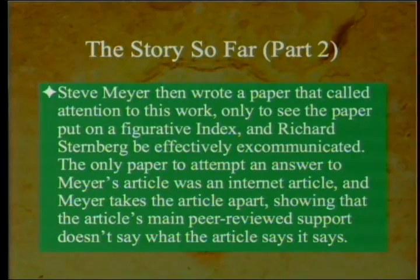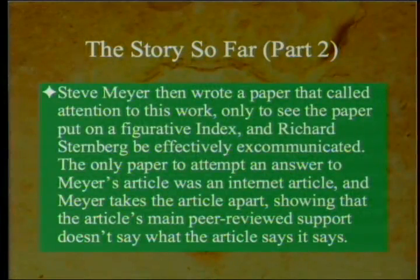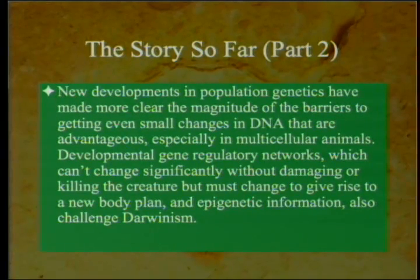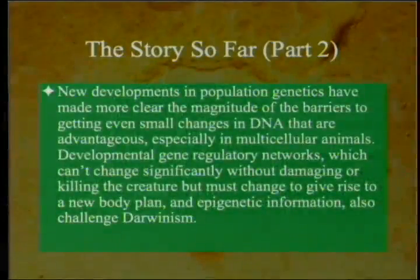There was no conversation started within the peer-reviewed literature at all. The only paper to attempt an answer to Meyer's article was an internet article, and Meyer takes that article apart, showing that its main peer-reviewed support doesn't say what the article claims. New developments in population genetics have made clearer the magnitude of the barriers to getting even small advantageous changes in DNA, especially in multicellular animals. Developmental gene regulatory networks can't change significantly without damaging or killing the creature, but must change to give rise to a new body plan.